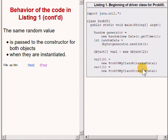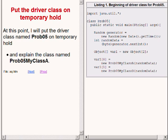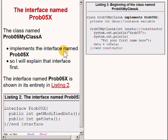Recall that a reference to any object of any class or interface type can be stored in an array element of type Object. The same random value is passed to the constructor for both objects when they are instantiated. At this point, let's put the driver class named Prob05 on temporary hold while I explain the class named Prob05MyClassA. As you can see from the code on the upper right, Prob05MyClassA implements the interface named Prob05X. I will explain the interface first.